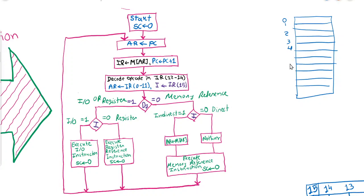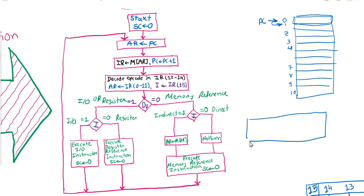Let's say our program starts from location 0, with locations 1, 2, 3, 4 for instructions and operands stored at locations 5 through 10. The initial value of the program counter will be 0. When the instruction at location 0 is fetched, the program counter immediately shifts to 1. The fetched instruction is stored into IR, divided into three parts: I (addressing mode), opcode, and 12 bits for address or operand. This step executes at T0, next at T1, and then at T2.